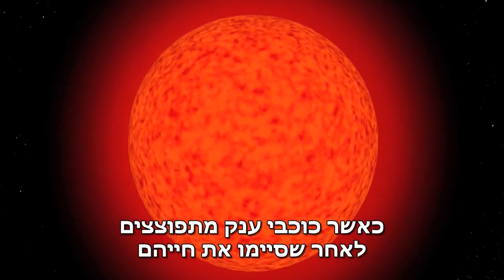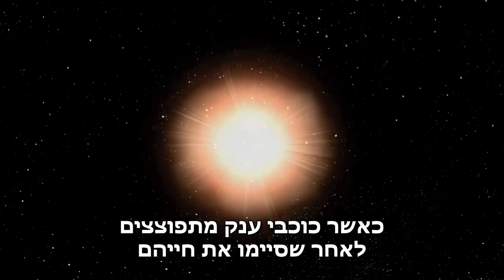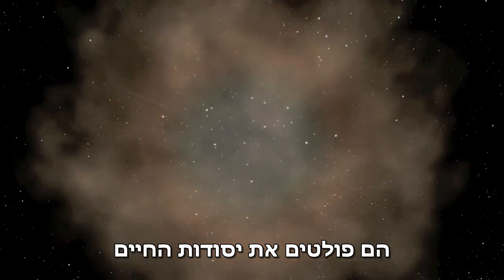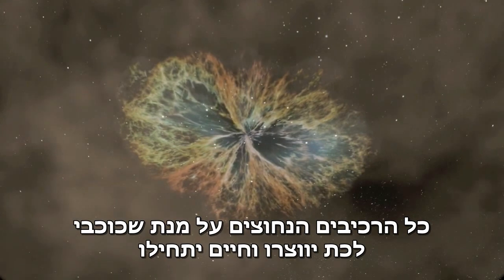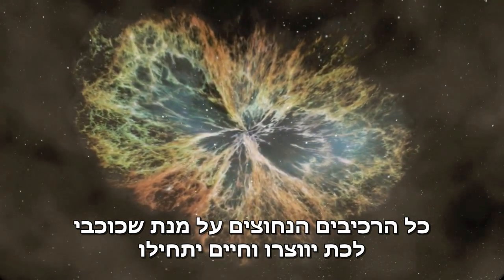As giant stars explode after living out their lives, they stream out the elements of life. Carbon, oxygen, nitrogen, iron, all the necessary components for planets to form and for life to begin.